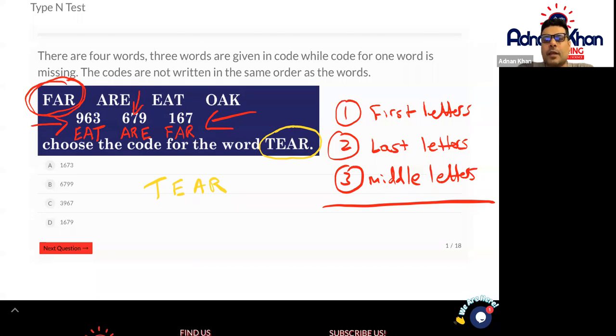So T E A R. Let's have a look. What does T represent? We can see this from our representation from that word EAT. What does E represent? E represents nine. What does A represent? A represents six. And what does R represent? R represents seven. So our answer is going to be three, nine, six, seven for this first question.